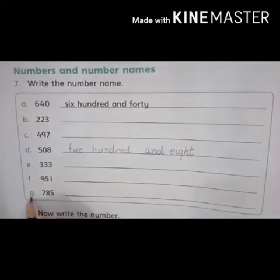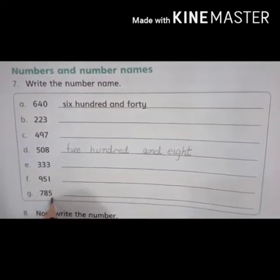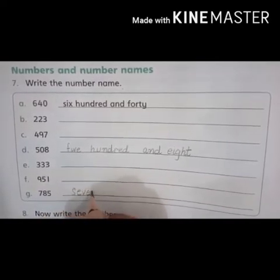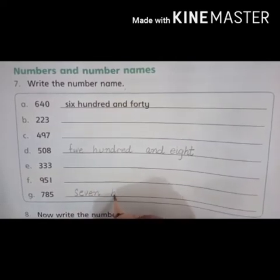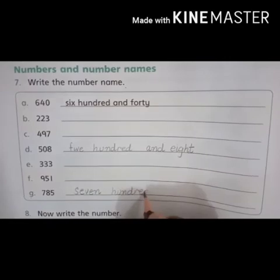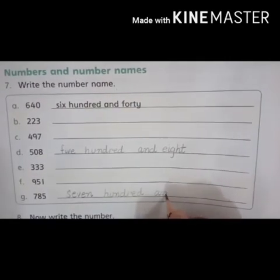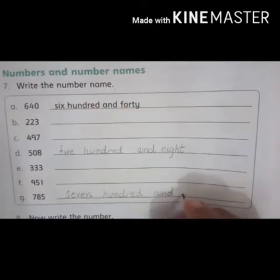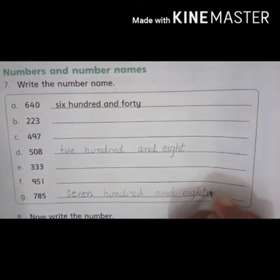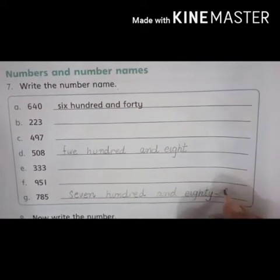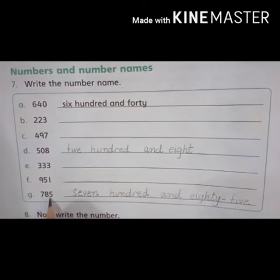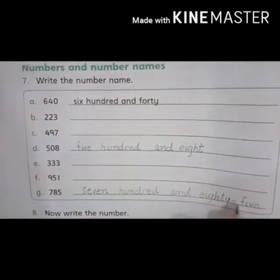Now look at part G: seven eight five — seven hundred and eighty-five. The spelling is S-E-V-E-N H-U-N-D-R-E-D and E-I-G-H-T-Y F-I-V-E. The number is 785.